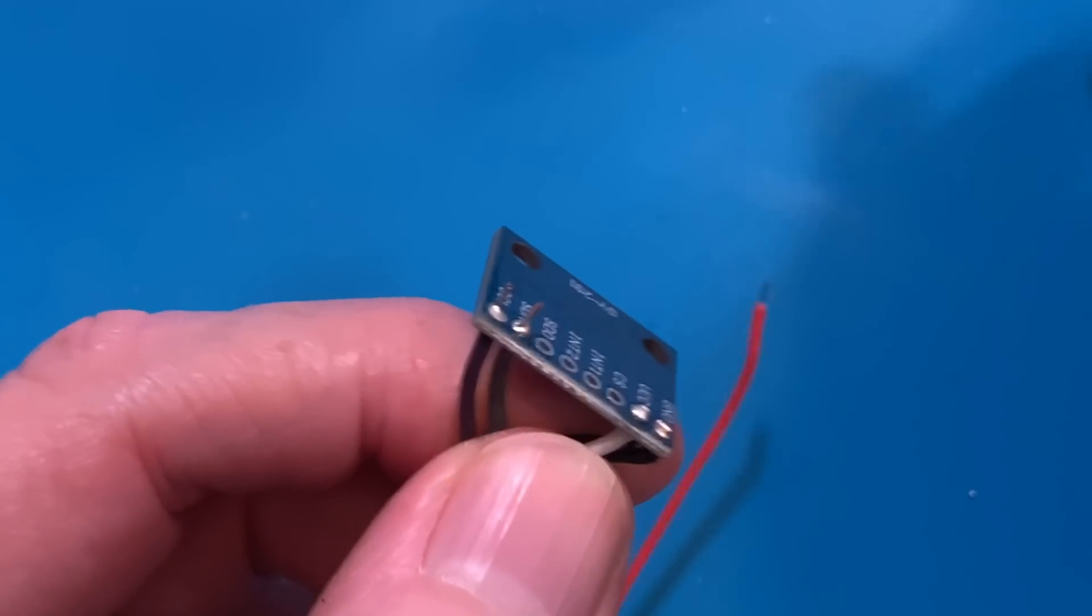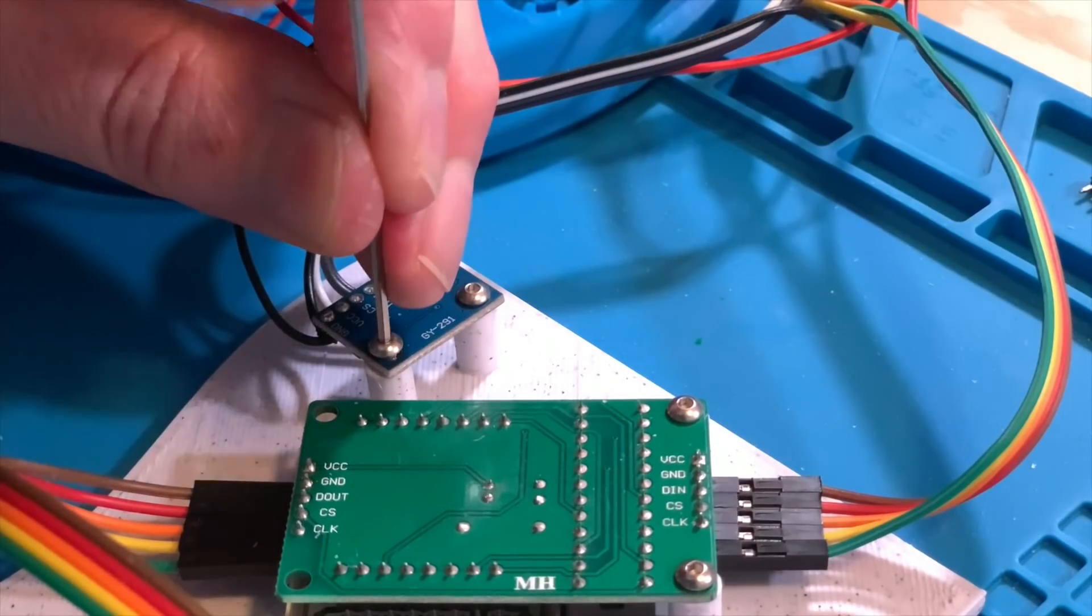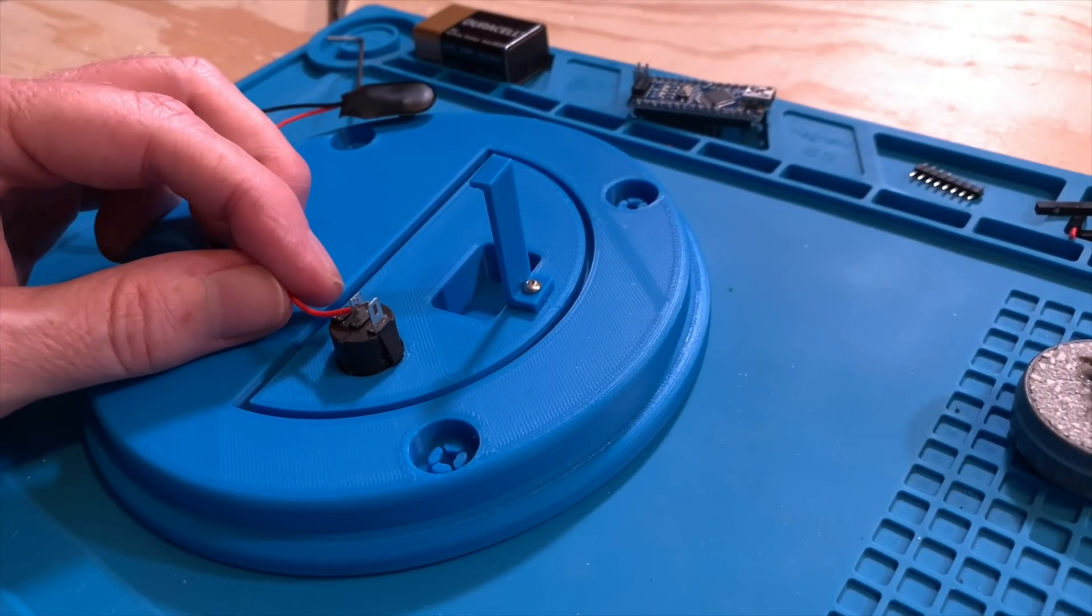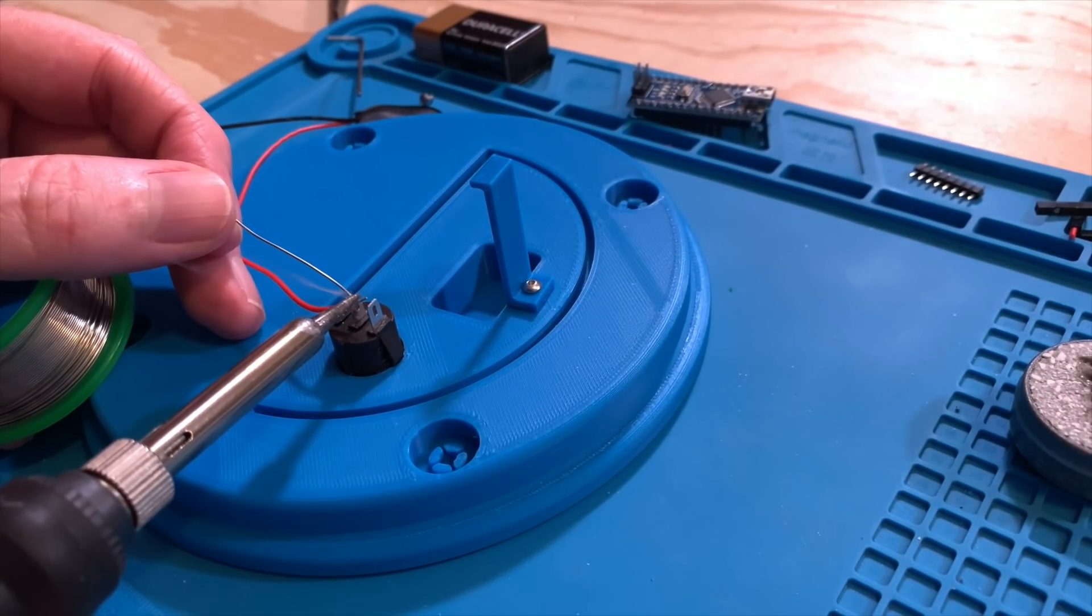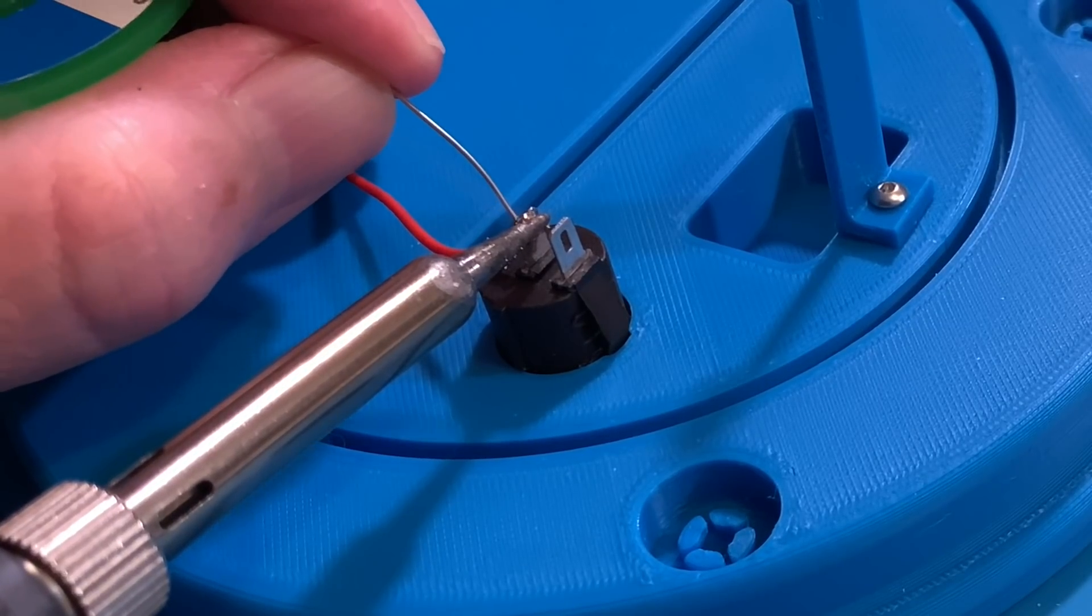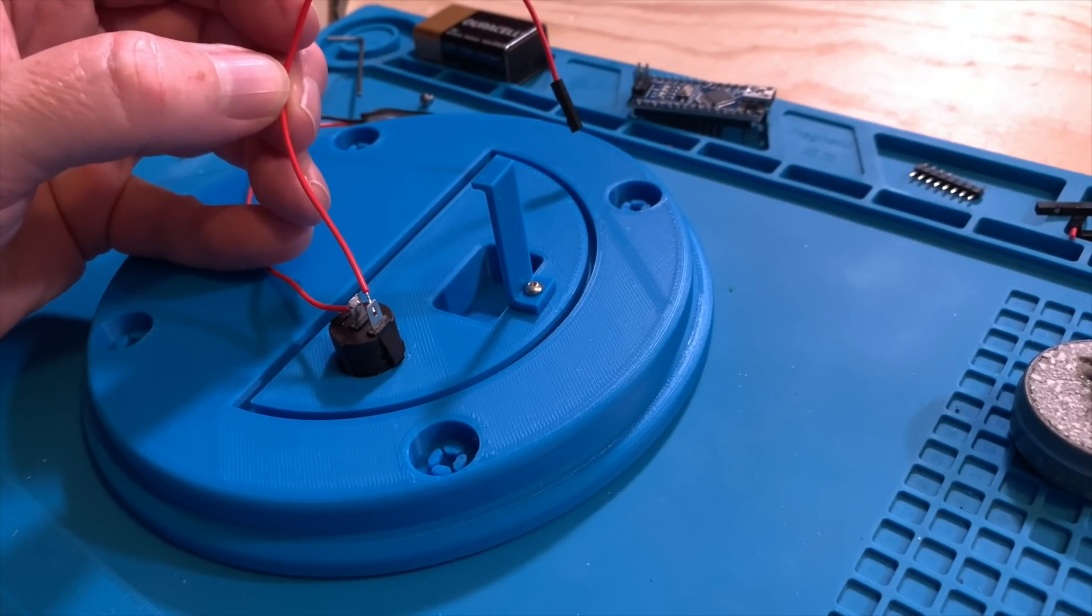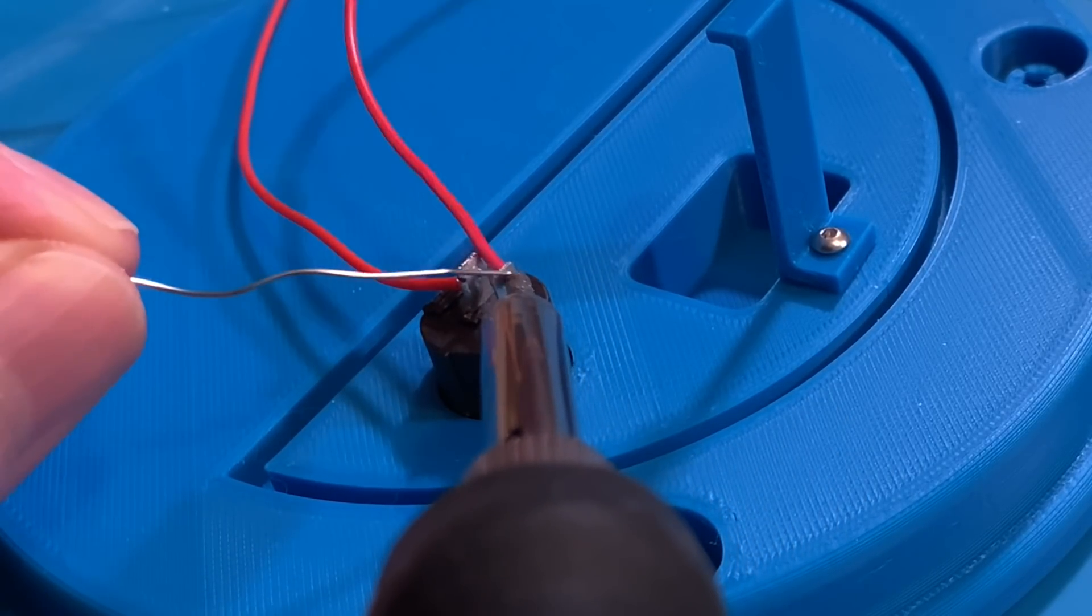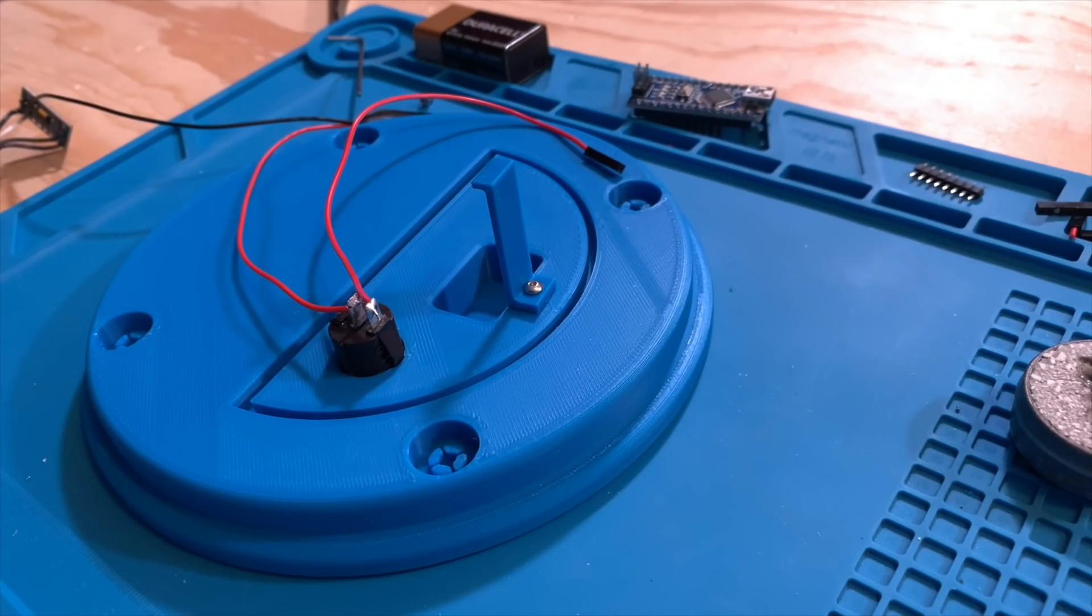Do the same for the holes labeled SDA and SCL. Snip the extra wire from the solder joints. Then, reattach the accelerometer to the front panel of the hourglass. Now, get the top of the hourglass, which has the power switch. Solder the red wire from the 9-volt battery clip to one side of the switch. Solder the red wire with the socket on it to the other side of the switch. And that concludes the soldering operation. Hopefully, you survived the ordeal.